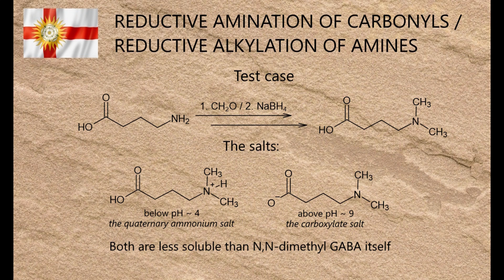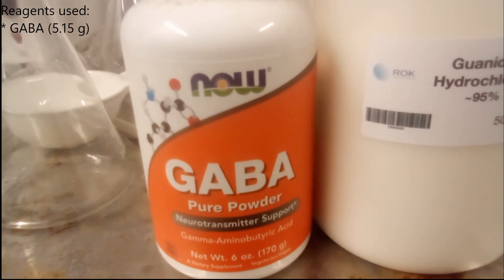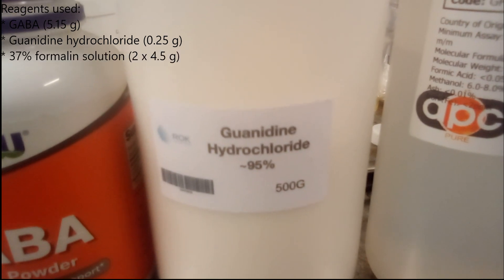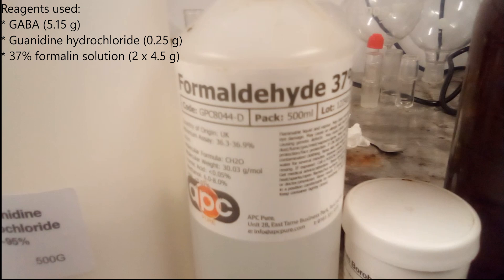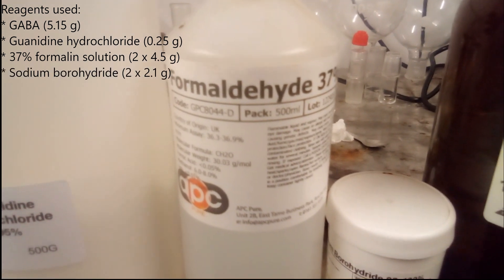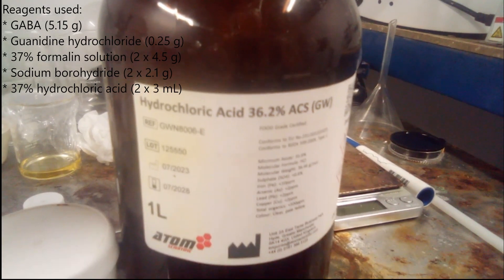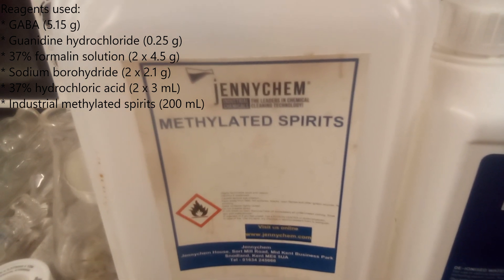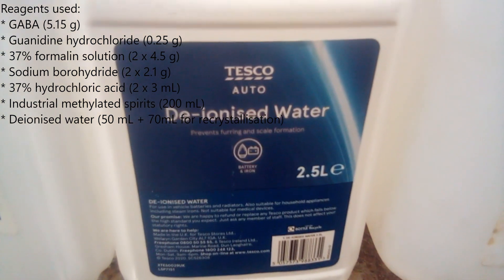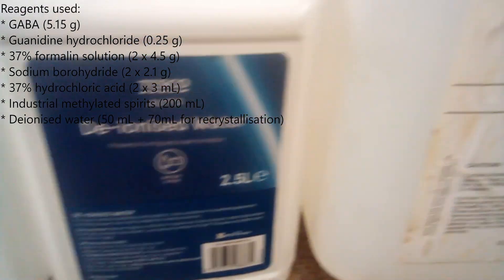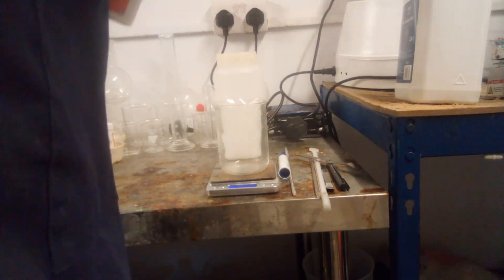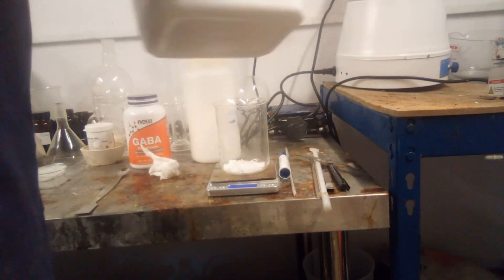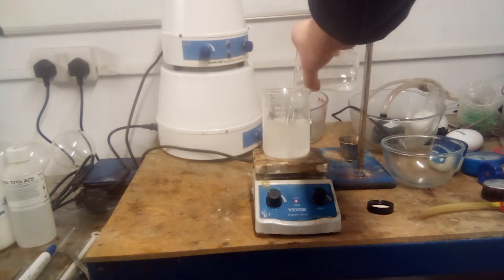The reagents used: GABA, 5.15g; guanidine hydrochloride, 0.25g; 37% formalin solution, 9g divided into equal portions; sodium borohydride, 4.2g divided into equal portions; 37% hydrochloric acid, 6ml divided into equal portions; industrial methylated spirits, 200ml; deionized water, 120ml in portions of 50 and 70ml; and acetone. Guanidine hydrochloride and GABA were dissolved in 50ml of water, then 200ml of methylated spirits were added to the mixture, followed by the first portion of formalin.